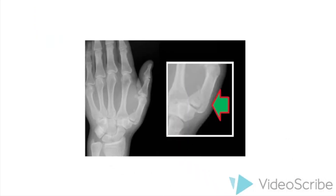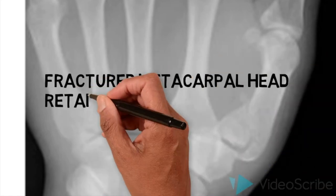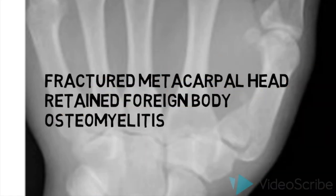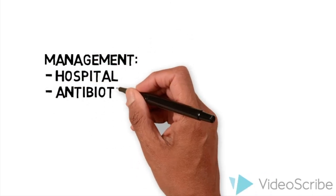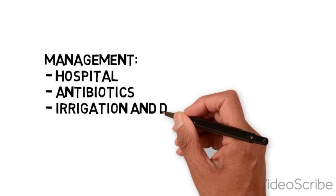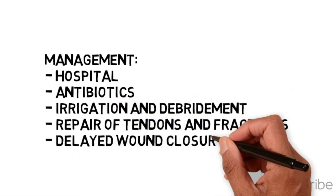One needs a special type of x-ray of the hand called the Brewerton view to look for fracture of the metacarpal head, a retained foreign body, or osteomyelitis. These patients are managed with hospital admission, broad-spectrum antibiotics, irrigation and debridement of the wound, repair of any tendons and fractures, and delayed wound closure.